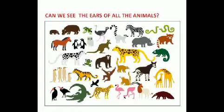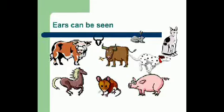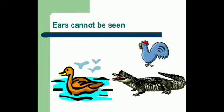Children, observe this picture carefully. Here you can see pictures of so many animals. Can we see the ears of all these animals? Look here. Here we can see the picture of a horse, buffalo, mouse, pig, dog, cat. We can see the ears of all these animals, and all these animals have two ears. Look at this picture — a duck, a crocodile and a cock. We cannot see the ears of these animals. So, there are some animals whose ears we can see and some animals whose ears we cannot see.